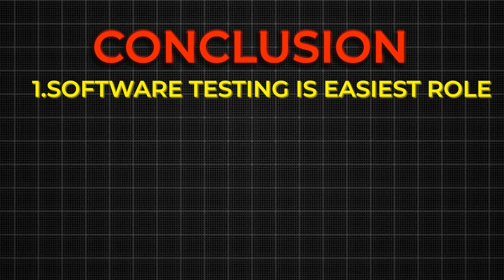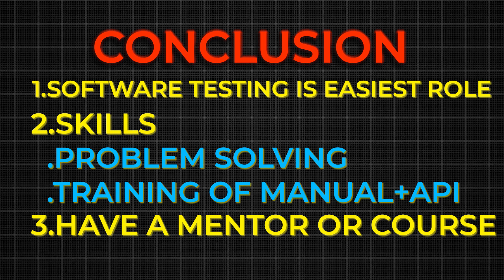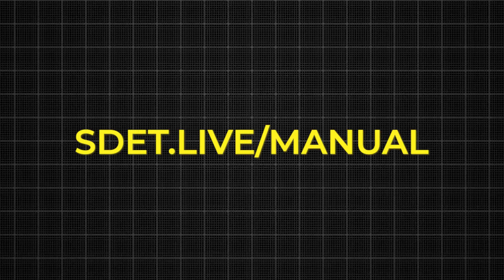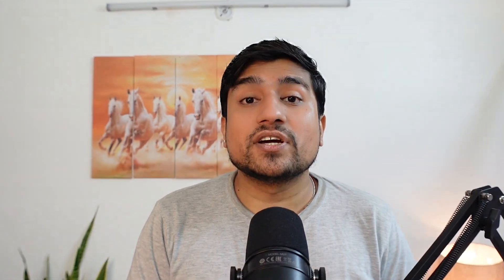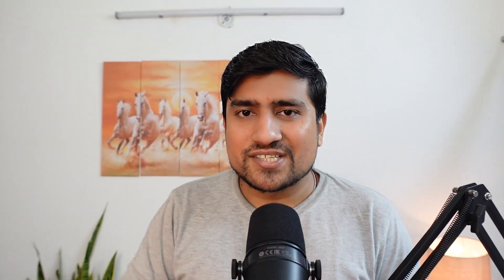In conclusion, software testing is one of the easiest roles to switch to from a non-IT background. You need skills — problem-solving and proper training in manual testing plus API testing. The topic roadmap I've already shared covers all topics and shows how you can become a manual tester in about 2.5 months. If you want to accelerate, the easiest way is to have a mentor or join a course and network with a community. There is no other way to move from non-IT to a QA role. If this video was helpful, type 'helpful' in the comments. To join the course, visit sd.live/manual. I create videos around software testing, test automation, and productivity — consider subscribing. Thanks a lot and I'll see you in the next video.